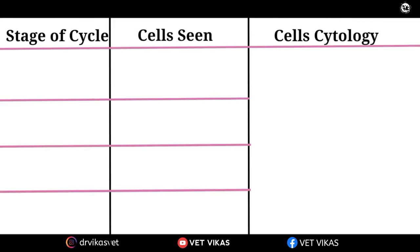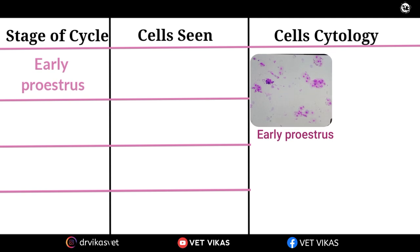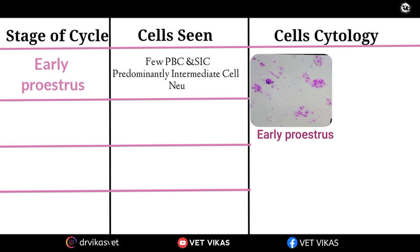Now we will see at what stage of the estrous cycle what kind of cells you will see in the vaginal cytology. First we will talk about the pro-estrus stage of the cycle. In early pro-estrus you will see few number of parabasal cells with more number of predominantly intermediate cells — more than 80% intermediate cells — with few number of superficial intermediate. In case of early pro-estrus you will also see neutrophils and RBCs in the cytological slide.